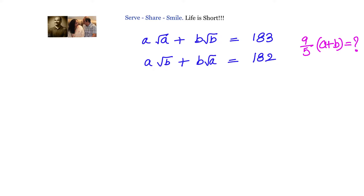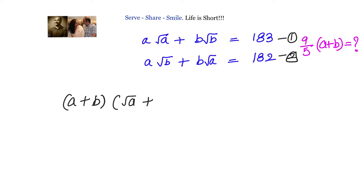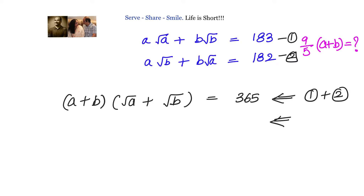In the first method, I will take these as equations 1 and 2, and try to add them and subtract them. I see numbers on the right-hand side that sum to 365. When I add the equations, I get: (a + b)·(√a + √b) = 365.